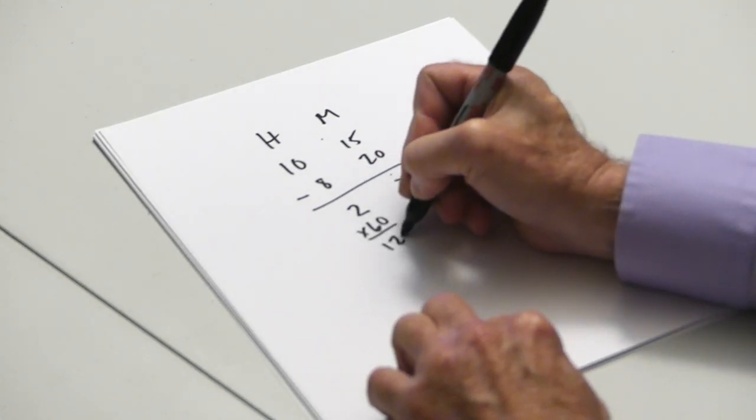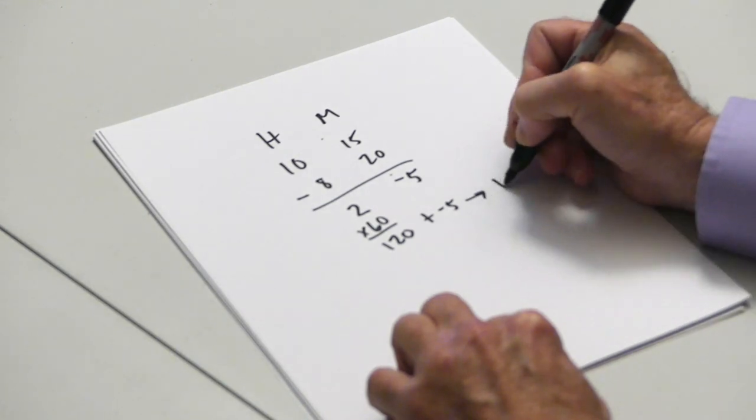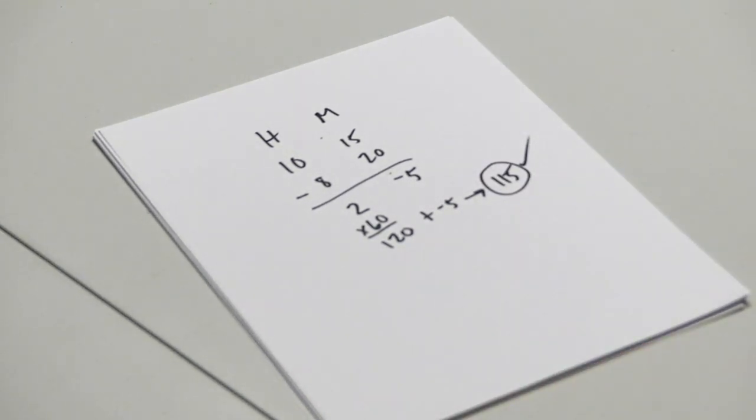That's 2 times 60 is 120, plus negative 5, and I still come out with the correct answer of 115 minutes.